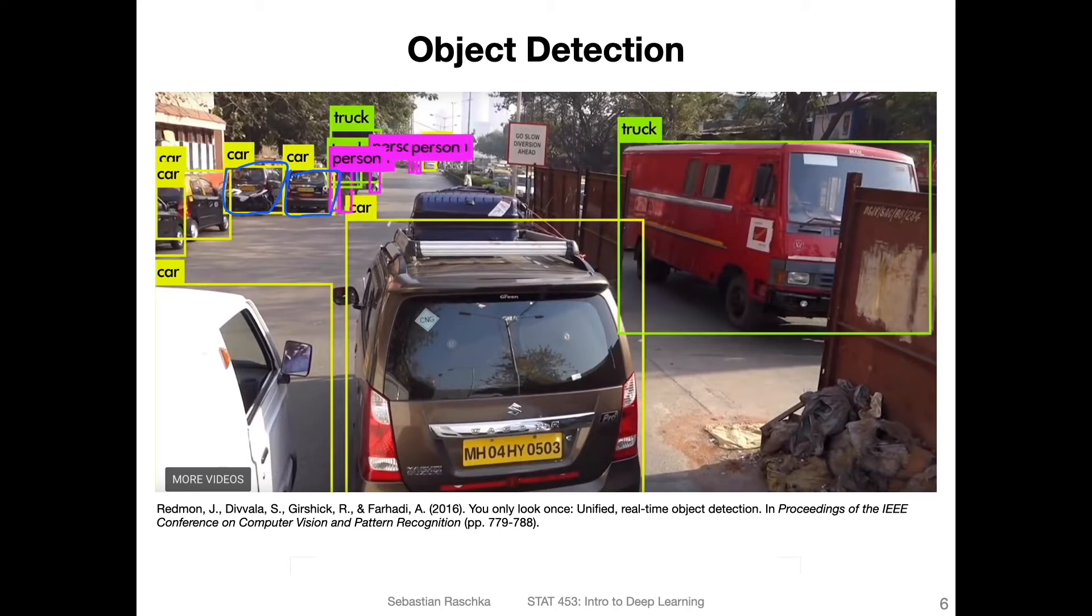You can think of it as a type of regression task where you can learn these two coordinates here and these other coordinates can be derived from the other two coordinates. You're essentially learning the bounding box construction, but then also assigning the label. One common example of that is YOLO, you only look once, but there are of course multiple different methods for that also.